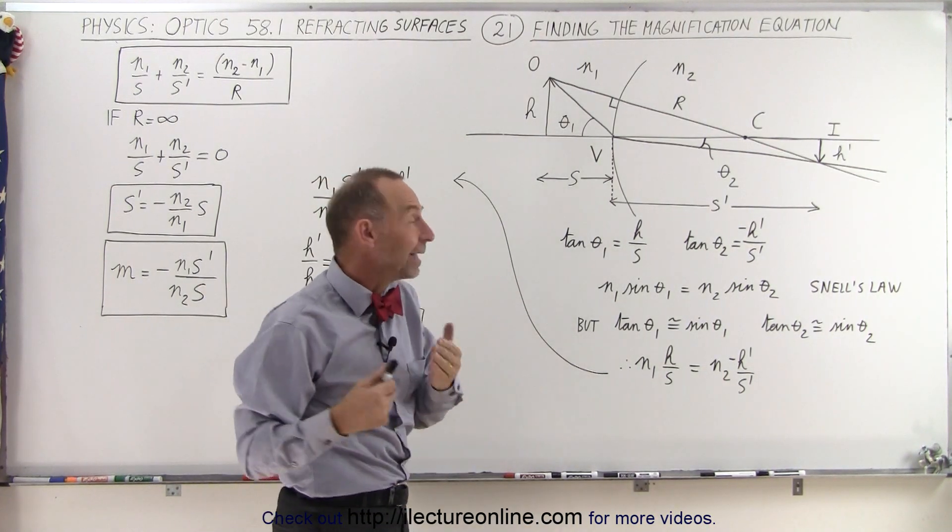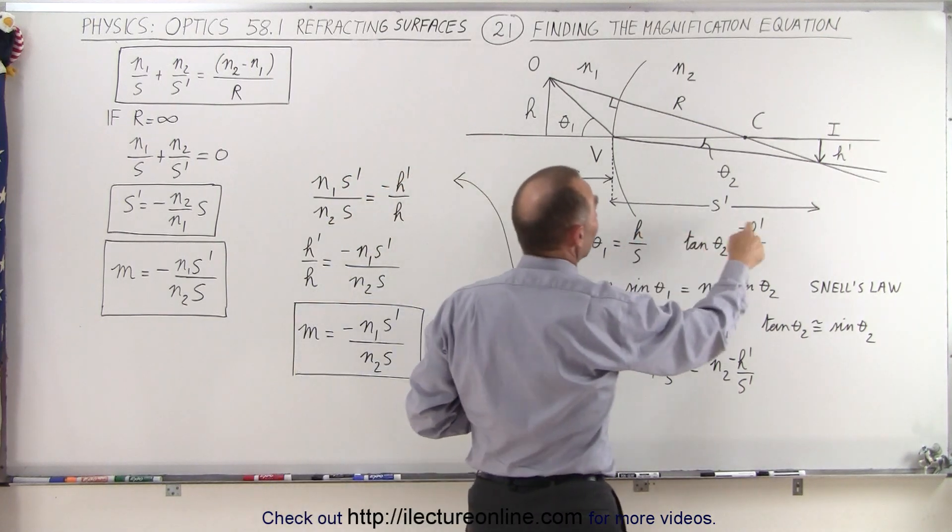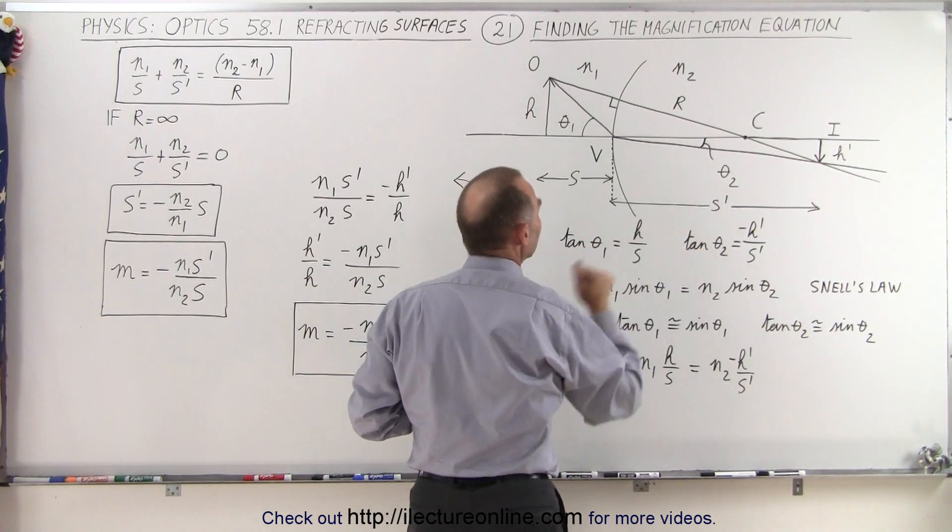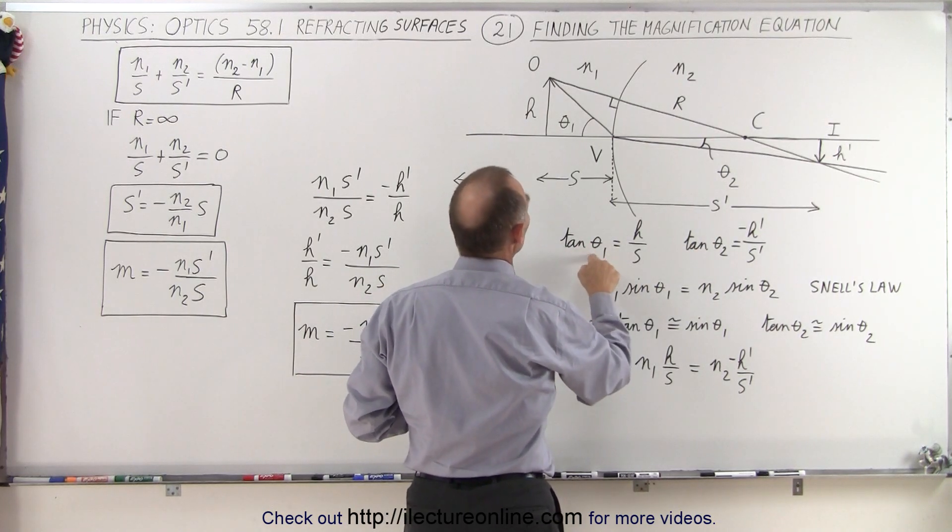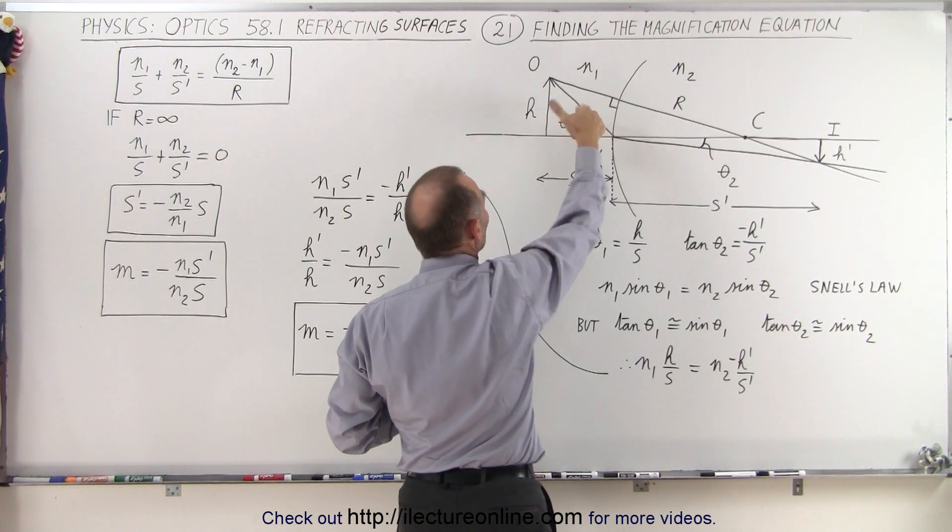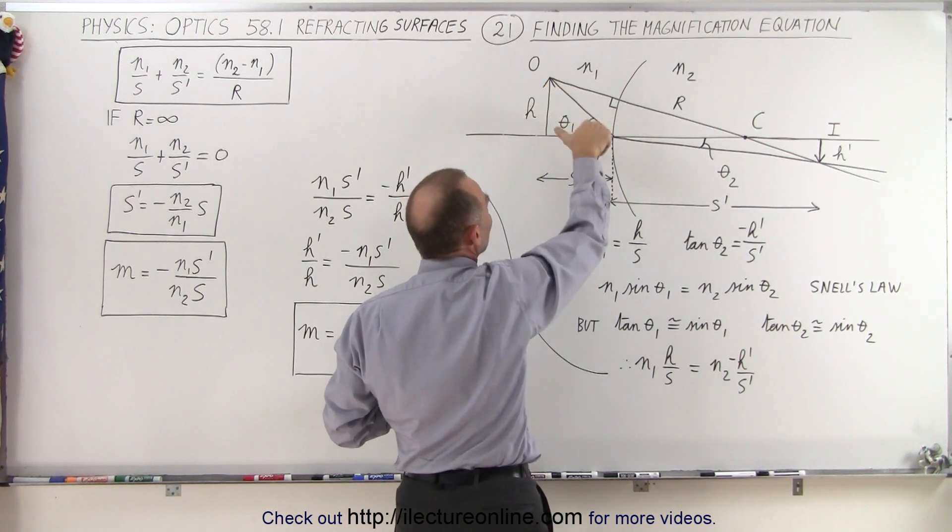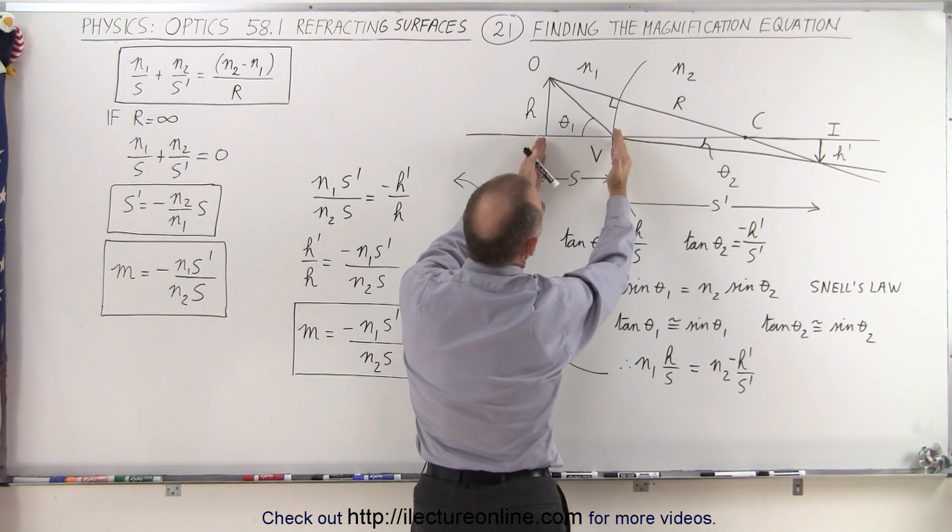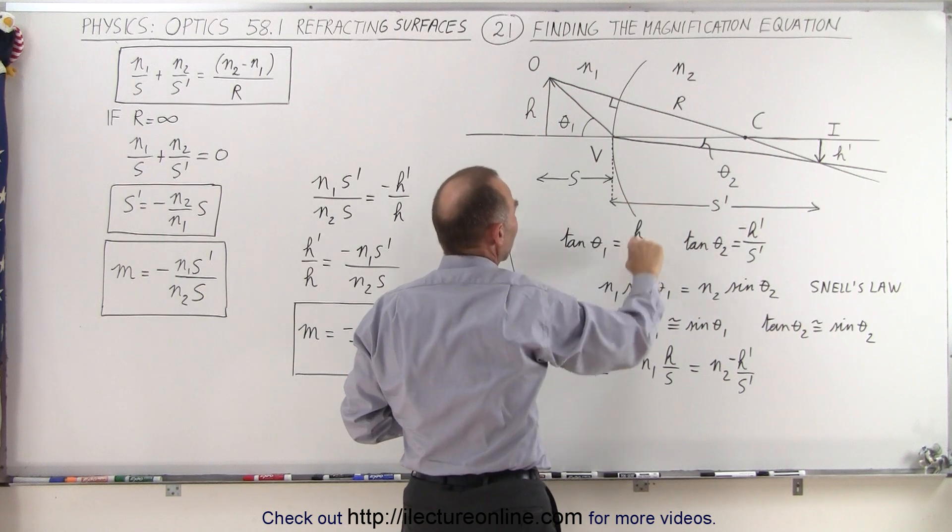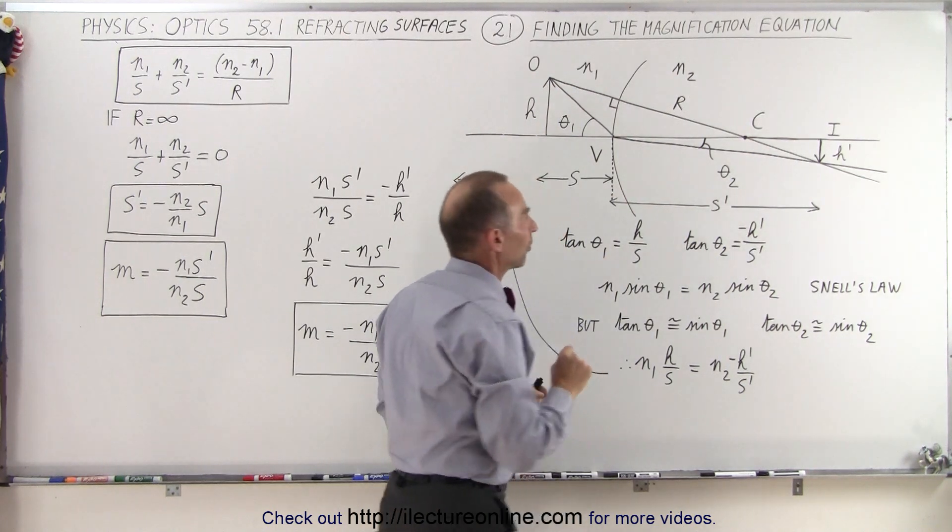We can also define the height H, and define the height of the image H prime, in terms of the tangent of the angle theta 1 and theta 2. The tangent of theta 1 is equal to the opposite side over the adjacent side. The adjacent side is going to be the object distance S. The height here is going to be H, so H over S is going to be equal to the tangent of theta sub 1.